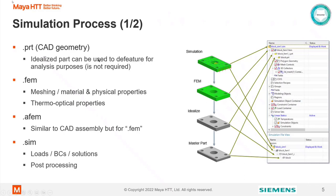The next section is Simulation Process. Unlike a lot of other CAE tools, in SimCenter we split up the model into several files. We have a part, which is CAD geometry. The master part and idealized part are both PRT files. The idealized part is intended for de-featuring of the master part — it's not required in the workflow, but is recommended if you need to do some de-featuring. The FEM is the mesh, which contains material and physical properties as well as thermo-optical properties.